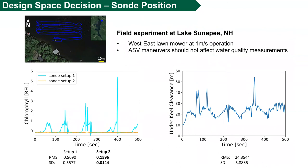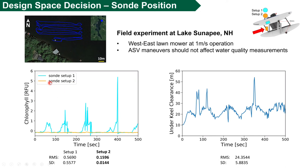Based on the confirmed motor design space, we tested the design shift at Lake Sanapin, New Hampshire for new installation of a water quality sensor. Using the quantitative measurement based on a chlorophyll sensor, we found that the vertical configuration as a set of 2 has less interference than the horizontal set of 1. These tests validate the modular decision of design space on research-oriented ASVs.